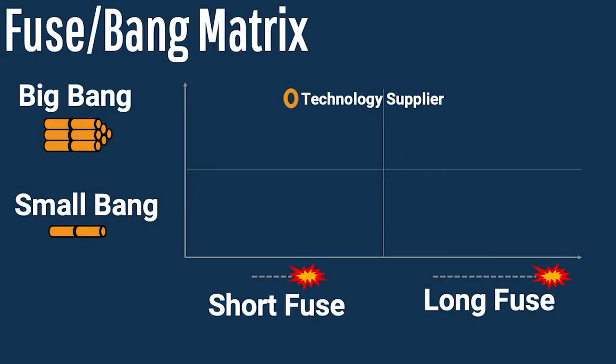The next most impacted in the value chain are the services companies. Services providers have their own assets that they use to provide their services — drilling rigs, fracking units. And those assets change or turn over more quickly, because they wear out. Their capital turns over more quickly, and they will be under pressure to stay current.